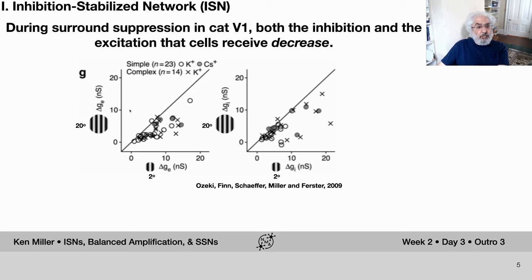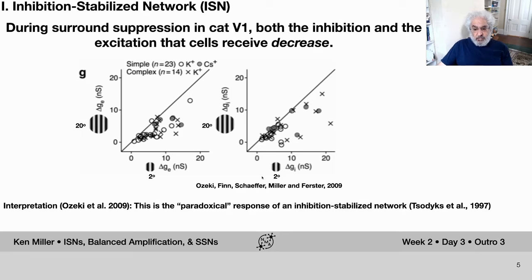However, that turns out not to be the case. In work from Hirofumi Ozeki and David Ferster, during surround suppression in cat V1, both the inhibition and the excitation that cells receive decrease. What you see here is the excitatory conductance delta GE and the inhibitory conductance delta GI, each compared for an optimal stimulus versus a large surround-suppressed stimulus. In both cases, the points lie primarily below the diagonal, meaning there's less inhibition and less excitation for the large stimulus. Our interpretation is that this is the paradoxical response of an inhibition-stabilized network, first pointed out by Misha Tsodyks in a paper in 1997.